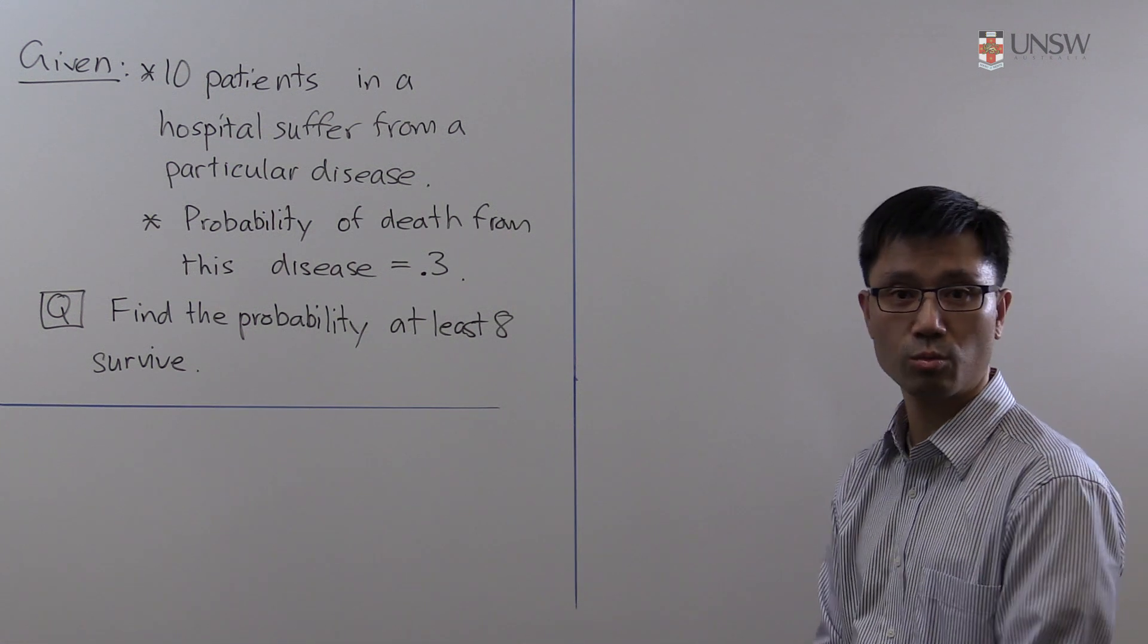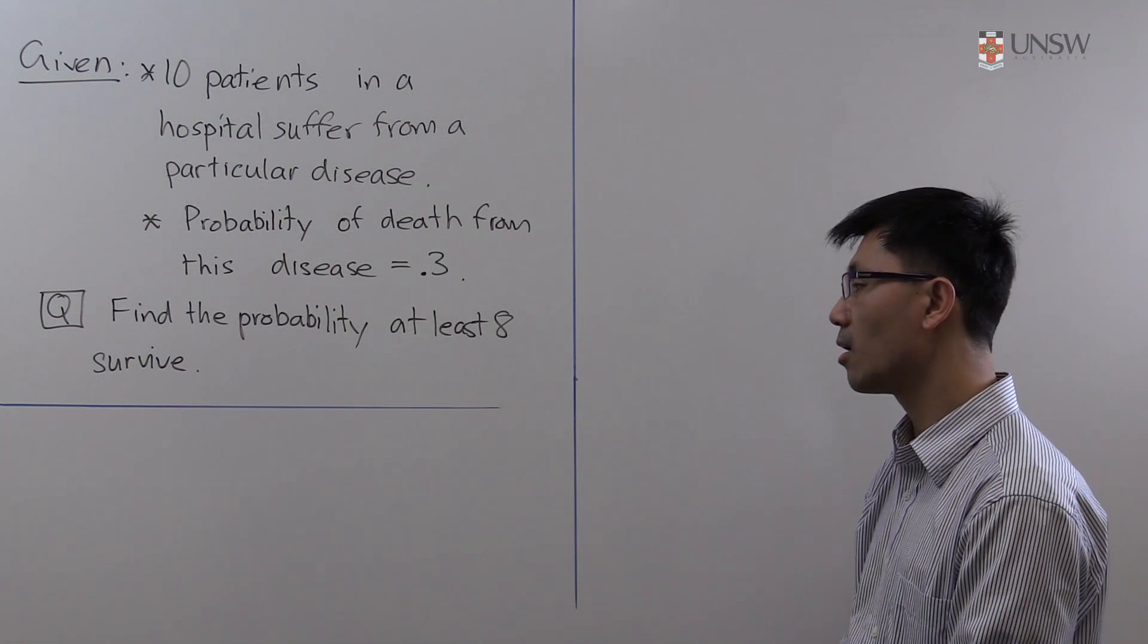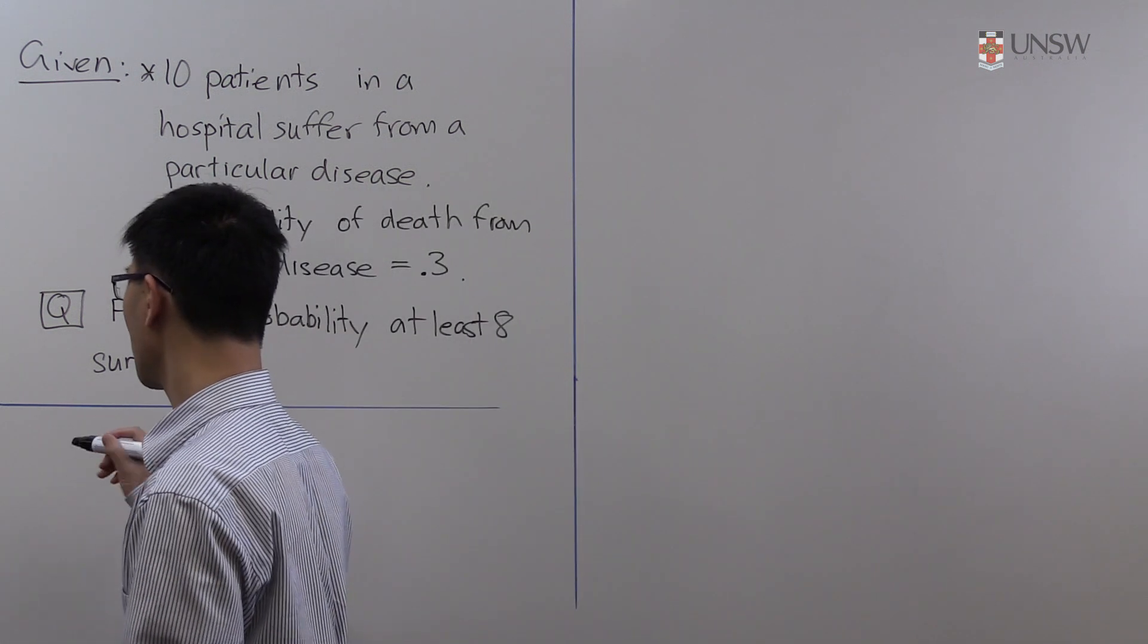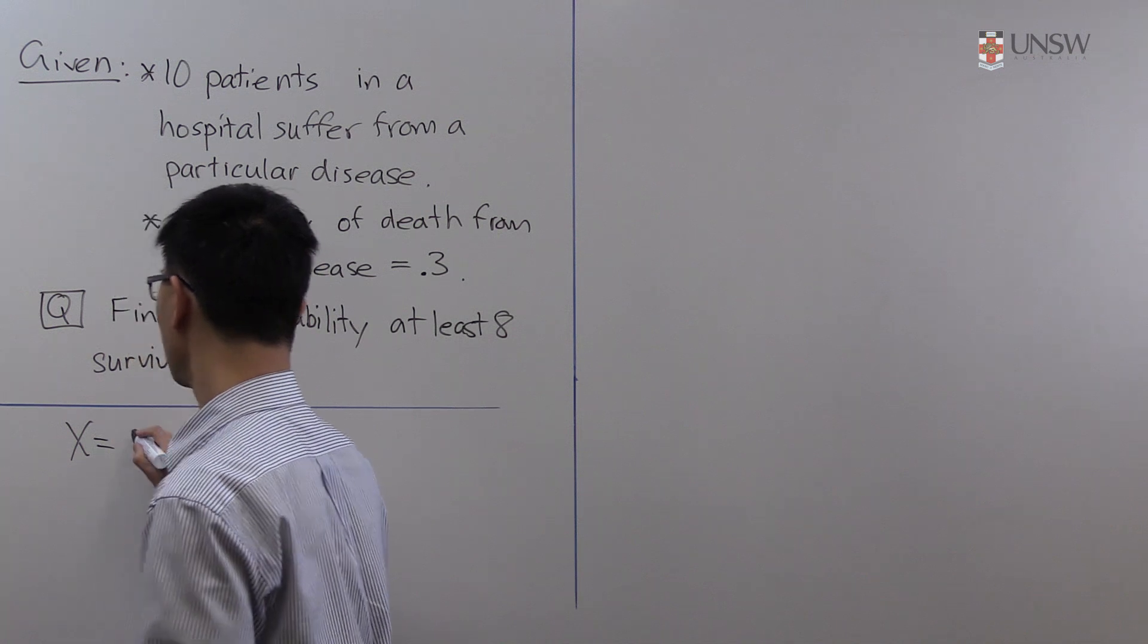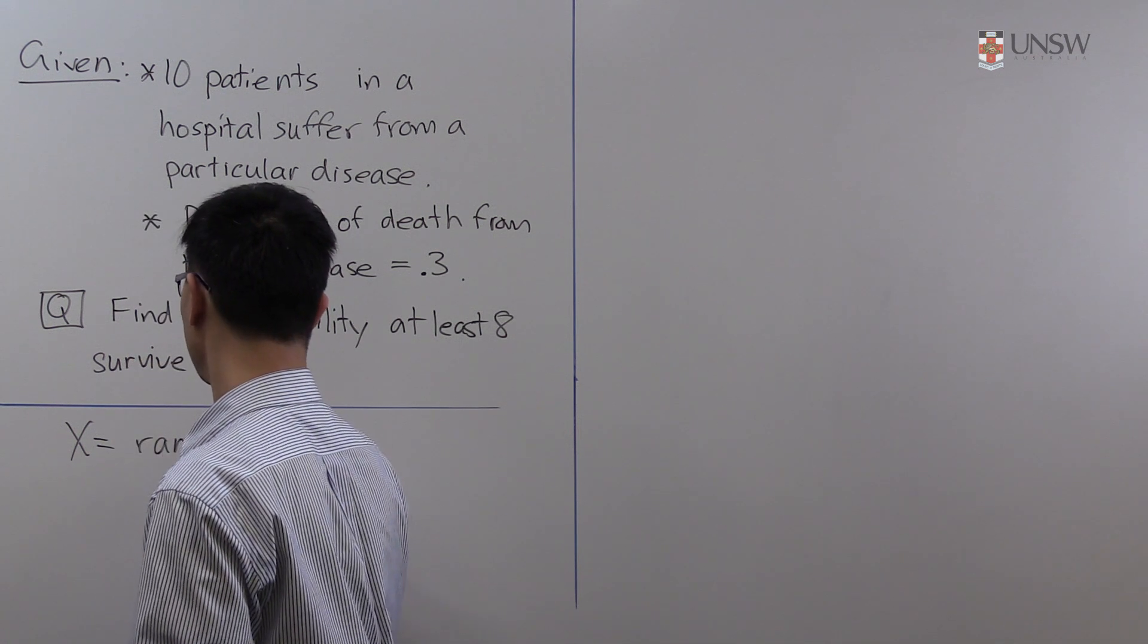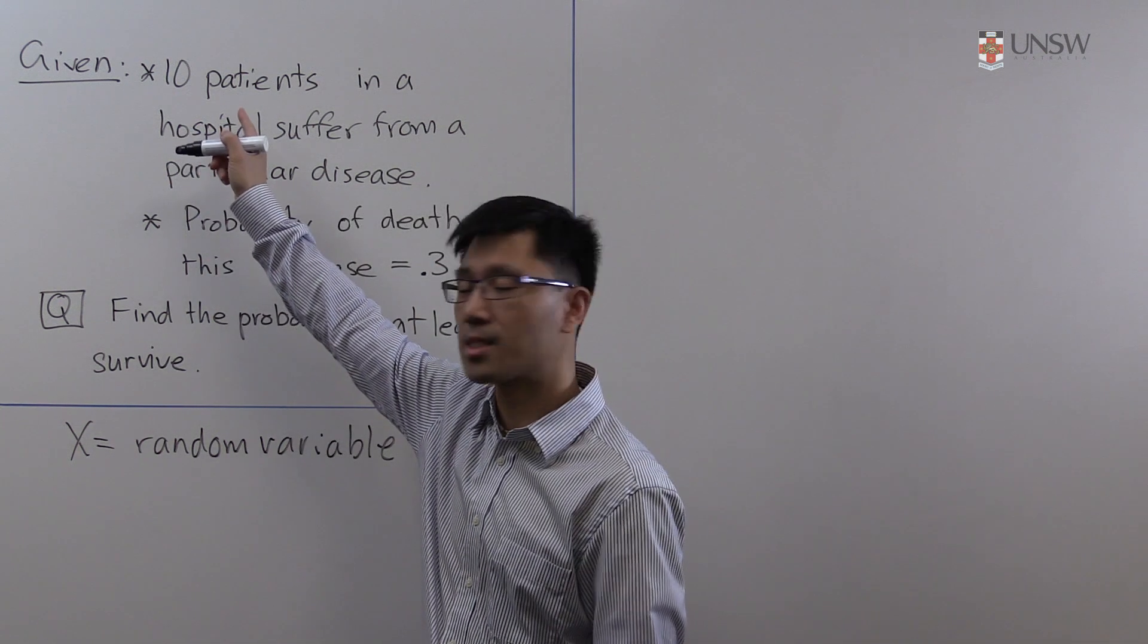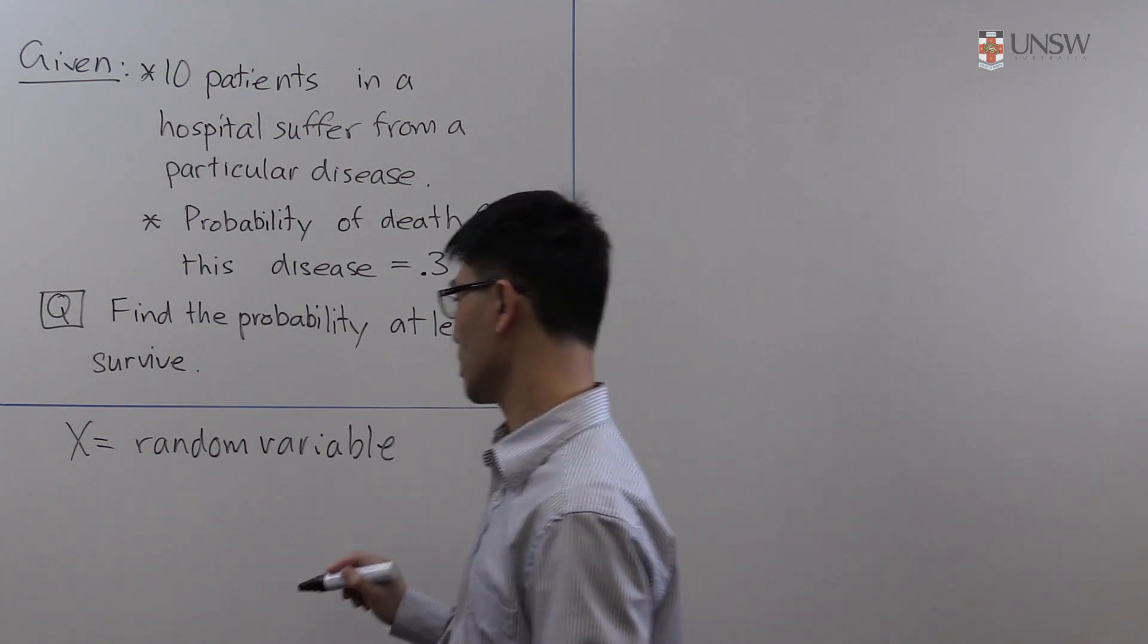To answer this question we'll first introduce some standard probability notation. We'll introduce X as the random variable representing the number of these ten patients who will die from this disease.